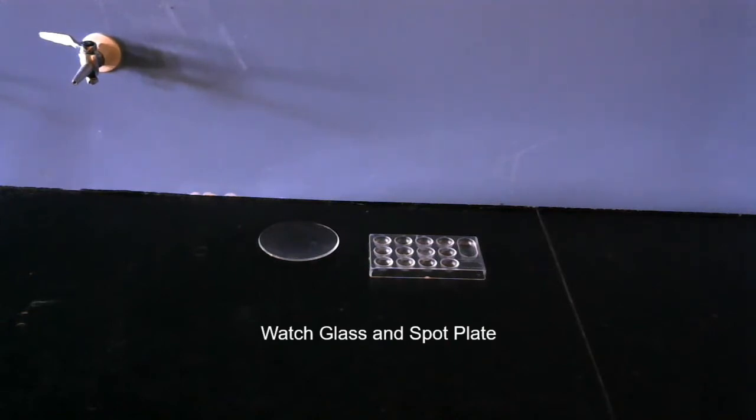The thing on the right is a spot plate, and you can use small amounts of different chemicals to see how they would react. Does a precipitate form? Does it change color? What happens? You can test that on a smaller scale and use less chemicals.